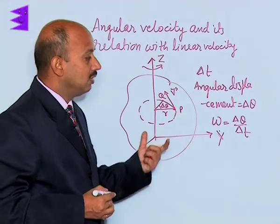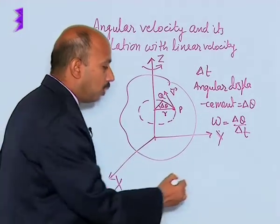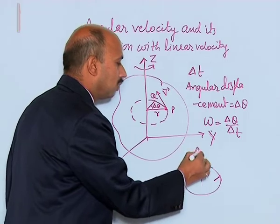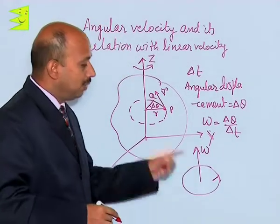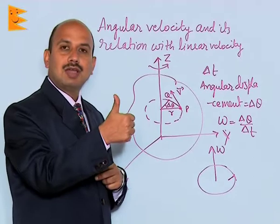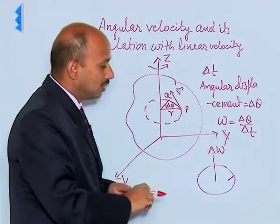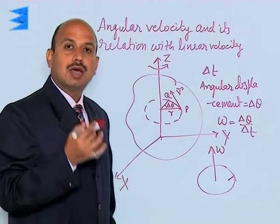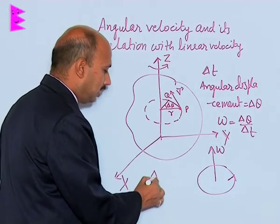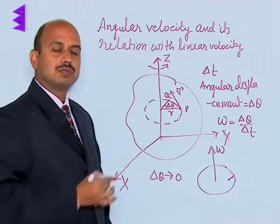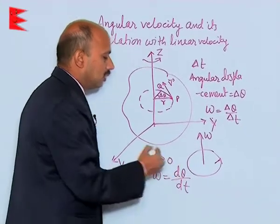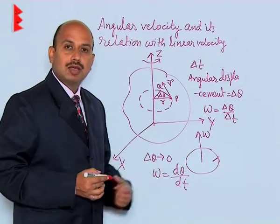Angular velocity is a vector quantity. Suppose a body is moving in a circular path in the anti-clockwise direction — the direction of angular velocity is determined using the right-hand thumb rule. Curl your fingers in the anti-clockwise direction and the thumb points upward, so the direction of angular velocity is upward, that is, along the axis of rotation. When delta-theta tends to zero, we can write omega equals dθ/dt, which is called instantaneous angular velocity.